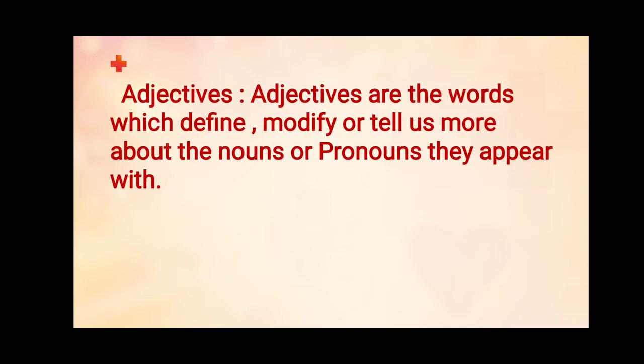An adjective always appears or comes along with a noun or a pronoun. You already know that nouns are naming words, and pronouns are replacing words — like 'he', 'she', 'it' — which replace the noun, like names.